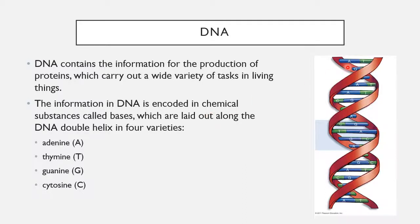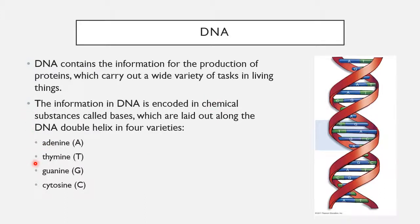If you look at this structure here, this structure is DNA, and these little pieces on the DNA are called bases. There are four different kinds of bases that make up the code of DNA, and those bases are adenine, thymine, guanine, and cytosine.